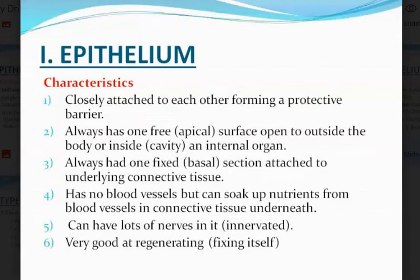What are the characteristics of epithelium? One, they are closely attached to each other, forming a protective barrier. Two, they always have one free surface — what we call the apical surface — opening to the outside of the body or inside the cavity of an internal organ. Three, they always have one fixed end — what we call the basal section — attached to the underlying connective tissue.